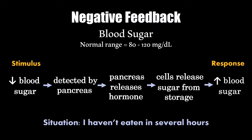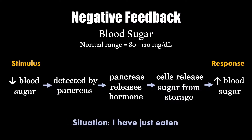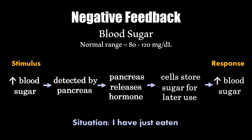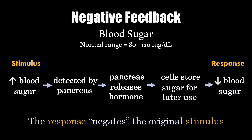Notice that the stimulus and the response are going in the opposite direction. If the opposite were to occur — if I had just eaten — my blood sugar would start to go up. This would also be detected by my pancreas, which would release a different hormone, causing cells to take sugar out of my blood and move it into storage, therefore decreasing my blood sugar and keeping it within the normal range. In both situations, the stimulus and the response are moving in the opposite direction, so the response is negating, canceling out the original stimulus.